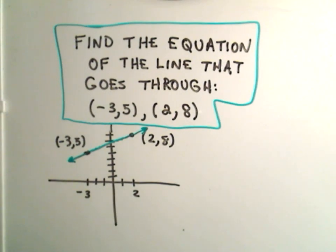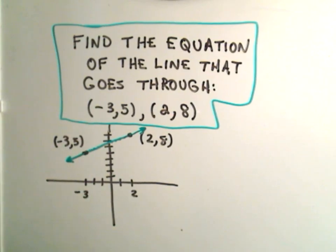And what I'm going to do here, so I've got a little picture. Find the equation of the line that goes through the point negative 3, 5. So remember negative 3, 5 would go 3 units to the left and 5 units up.